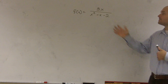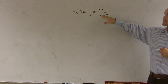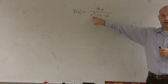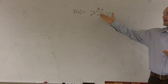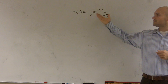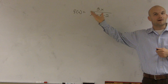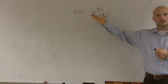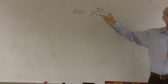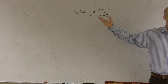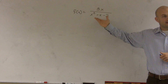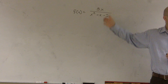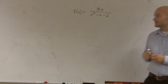The vertical asymptote occurs when the polynomial on the bottom is equal to zero. Because remember, you can't divide by zero. So whenever you get zero on the bottom, your function is not defined.